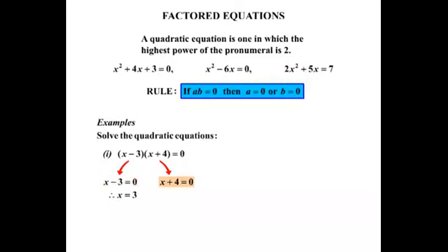x plus 4 equals 0. The other equation, take the plus 4 over, becomes minus 4. So therefore, x equals negative 4.